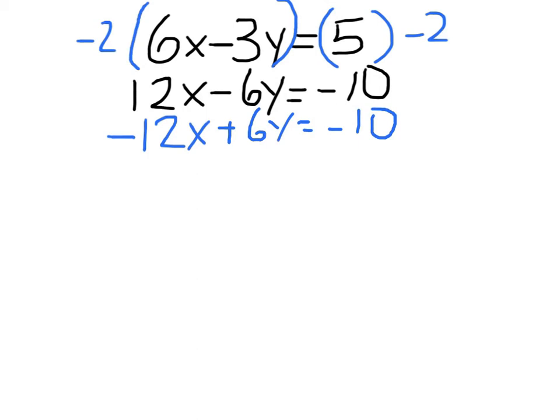So those guys cancel. Plus 12x, minus 12x. Those guys cancel, plus 6y, minus 6y, which means on this side we have 0, and on this side we say minus 20.